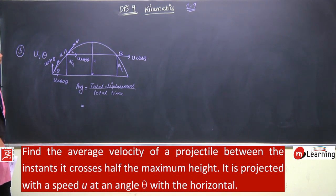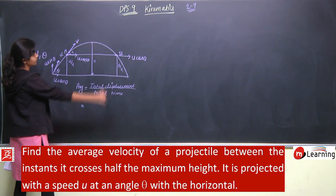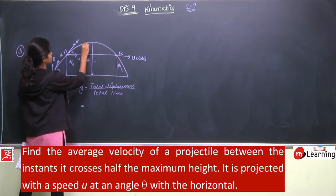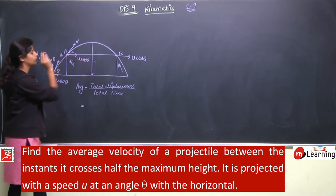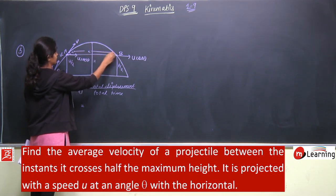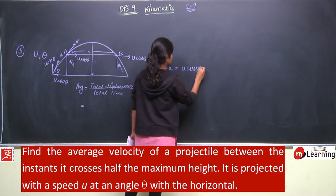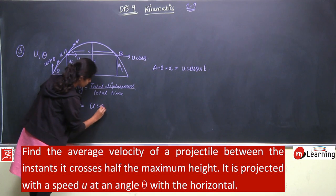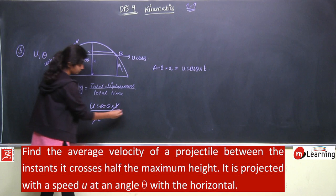What will be the total displacement? The total displacement will be this horizontal distance. Suppose this distance is covered in time t — it takes time t to go from point A to point B. So this distance x from A to B will be u cos theta into t. So total displacement is u cos theta into t, divided by total time t. t cancels, and that gives u cos theta.